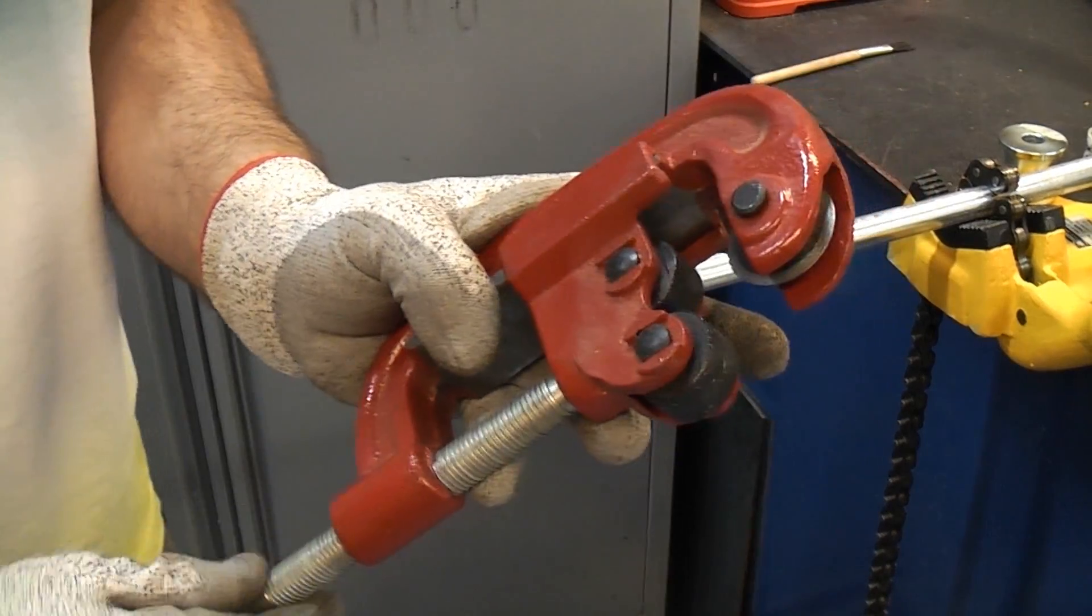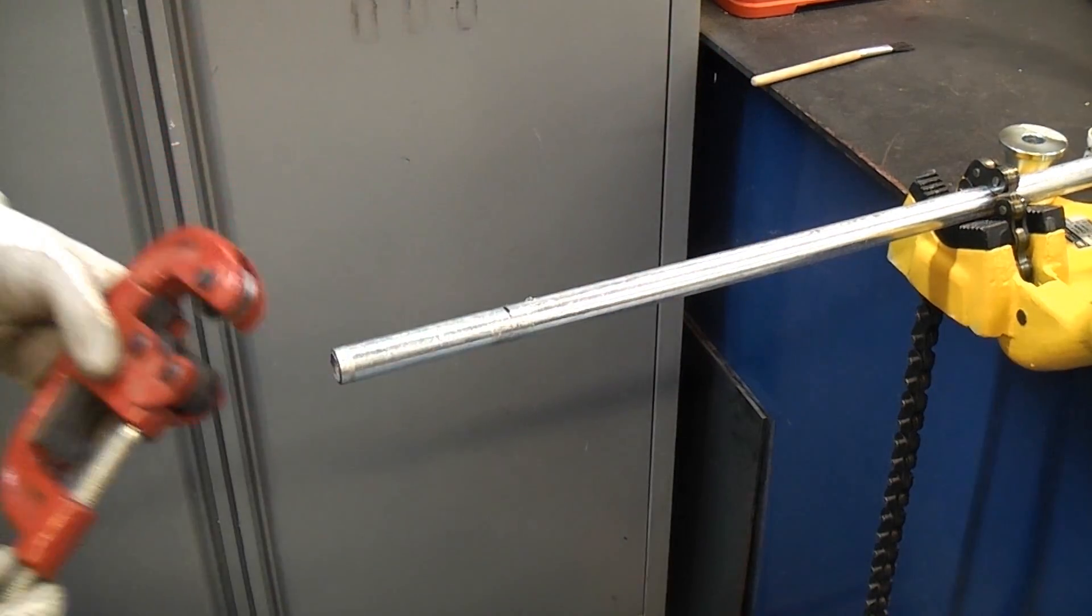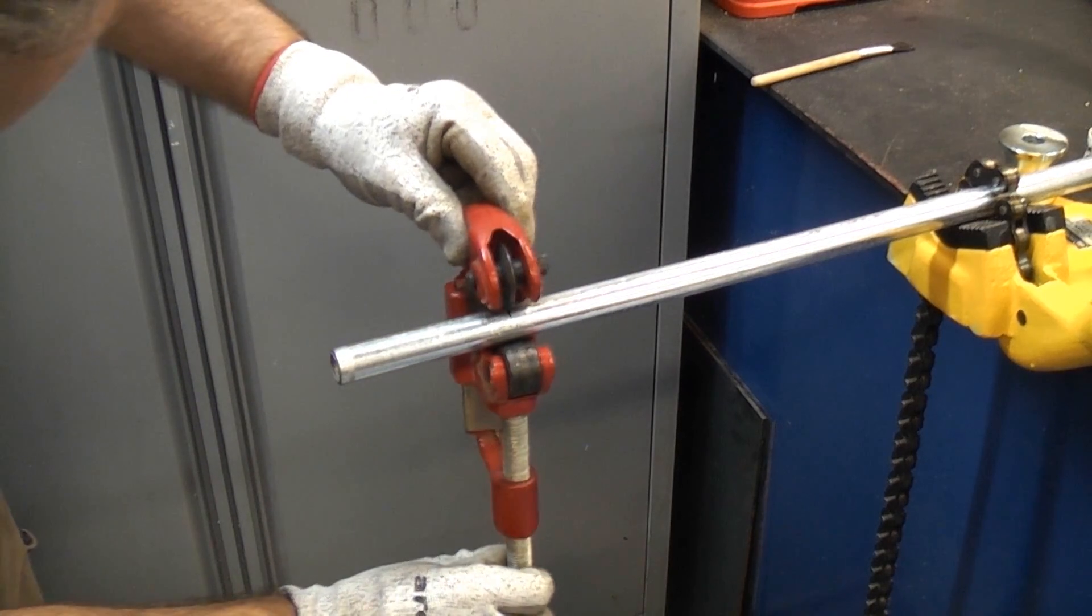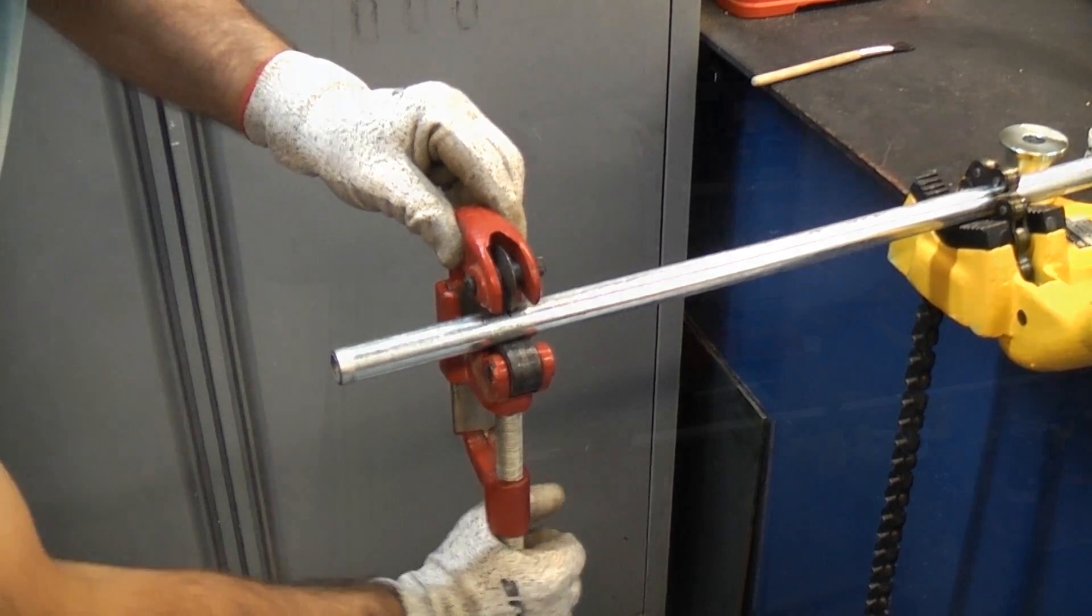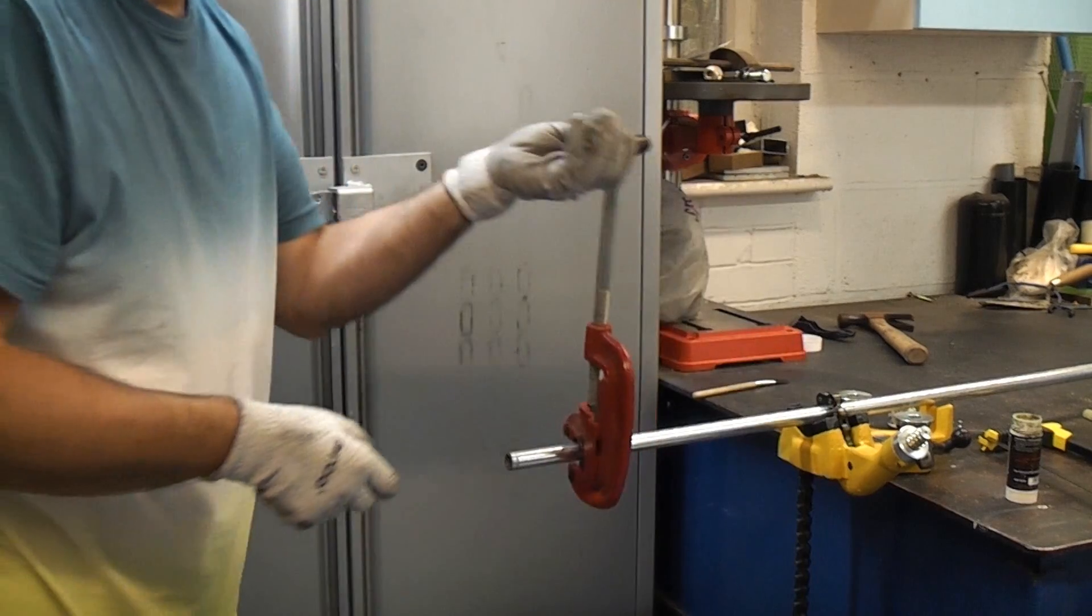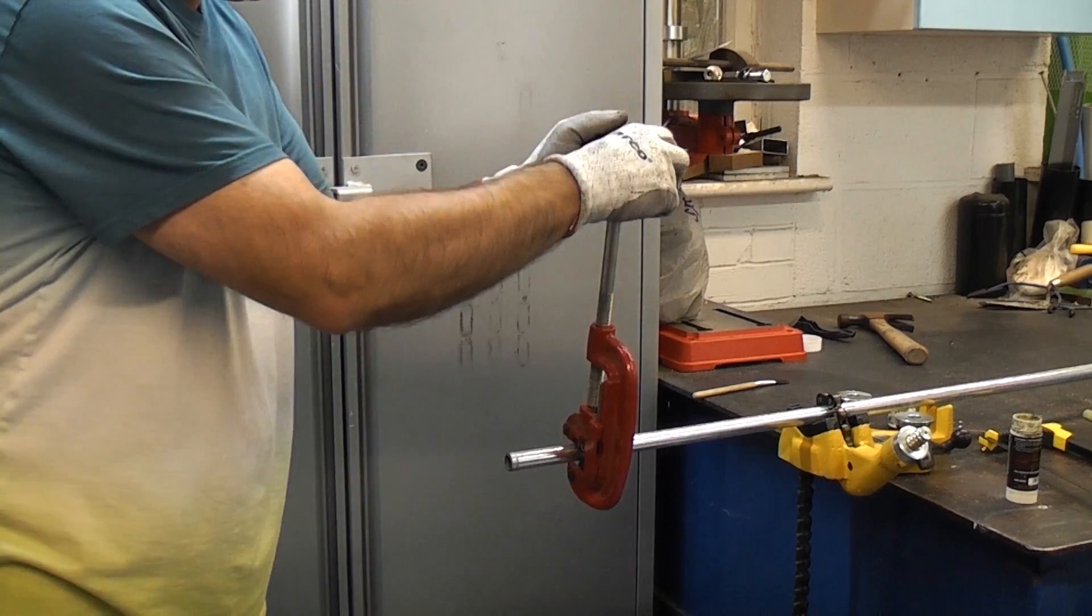So these are often used on pipe and this one will cut from half an inch up to two inches. So all we need to do is put that in the correct position and then tighten it up, and we can then start to rotate that around the conduit. Every time you do a revolution you can tighten the handle further.